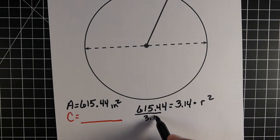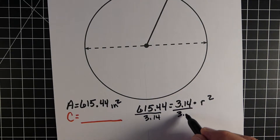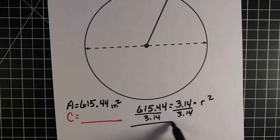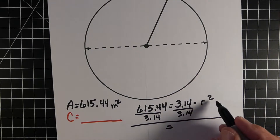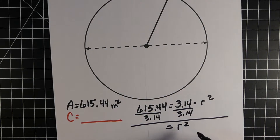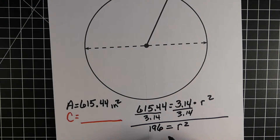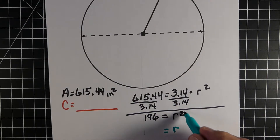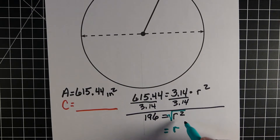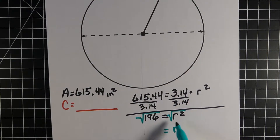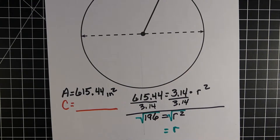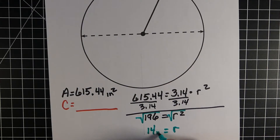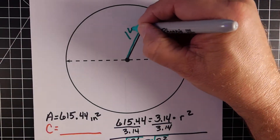We divide both sides by pi, or 3.14. On the right side we have radius squared, and the 3.14s cancel out. On the left side we get 196. To go from radius squared to radius, we find the square root of both sides. The square root of radius squared is radius, and the square root of 196 equals 14. So our radius is 14 inches.